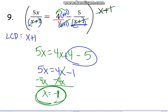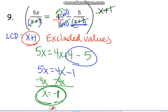Notice I did not check my excluded values. We always want to check those excluded values. So what can I plug in here for x that's going to make that equal to 0? You guessed it. x cannot equal negative 1. What's my solution? Negative 1.